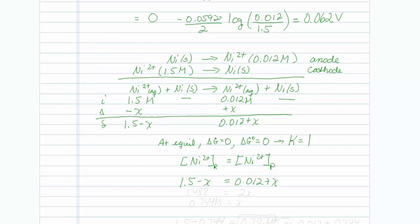I do believe I would get 2x on this side, and I would get 1.5 minus 0.012 on the other side. So that would be 1.488, and if I divide that by 2, equal to 0.744 molar, equaling x.